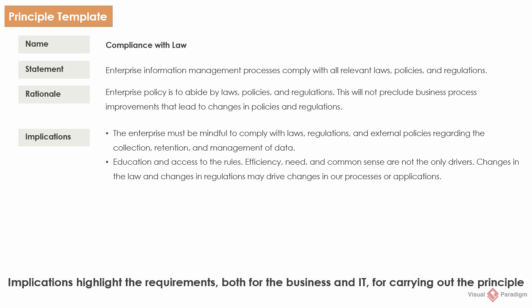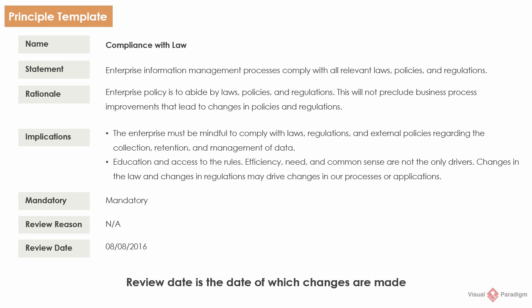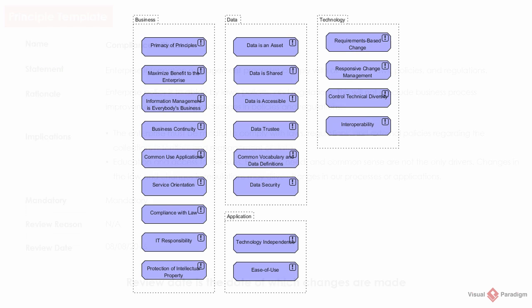Here is some optional information: you can state whether the principle must be fulfilled or is just advisory, explain why changes were made, and record the date on which changes were made. You can also use the ArchiMate modeling language to model the principles visually.